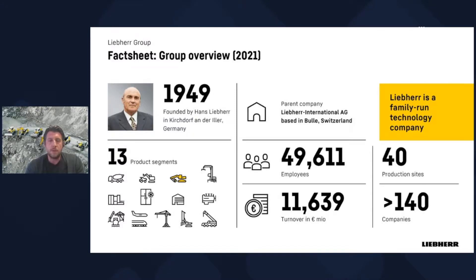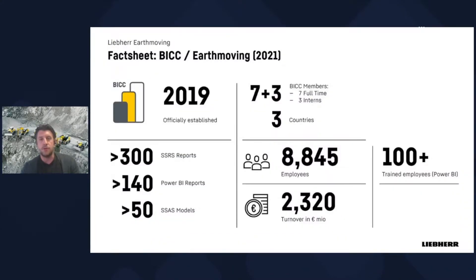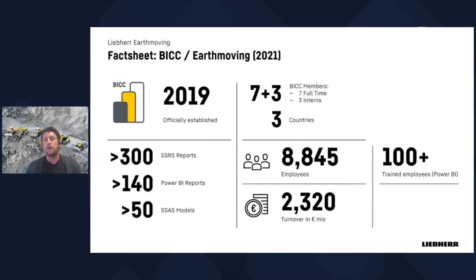A short overview on Liebherr: Liebherr was founded in 1949 by Hans Liebherr. We have over 13 different product segments, the headquarters is in Switzerland, roughly 15,000 employees worldwide, and it's still a family-run technology company. Today I'm representing the earth moving division. We established a BI competence center in 2019 — seven full-time employees and three interns supporting over 80,000 employees in the division.